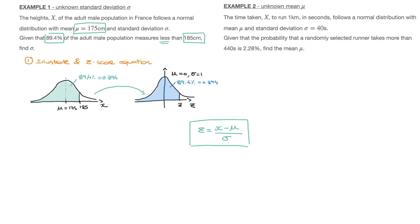The z score equation connects the x value we have — 185 — to its corresponding z score on the standard normal distribution. Replacing x with 185 and mu with 175 gives z = (185 − 175) / σ. Since 185 minus 175 is 10, this simplifies to z = 10 / σ. That's step one done; we now have an equation involving the unknown sigma and the z score we'll find in step two.